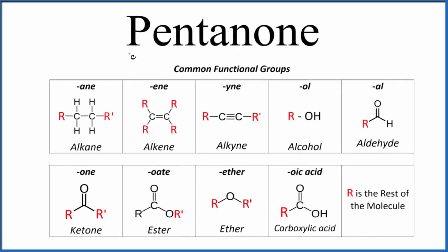Let's write the structural formula for pentanone. So the first thing we notice with pentanone here is this O-N-E at the end. When you see that O-N-E, you're going to have a ketone.